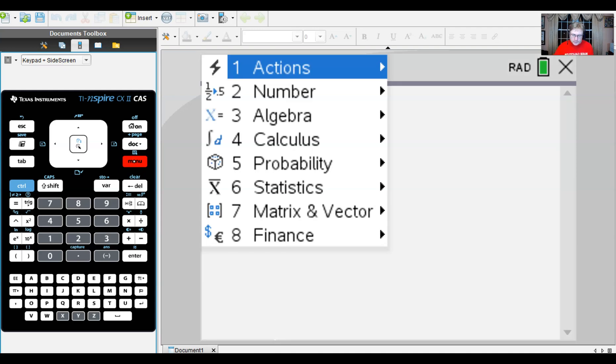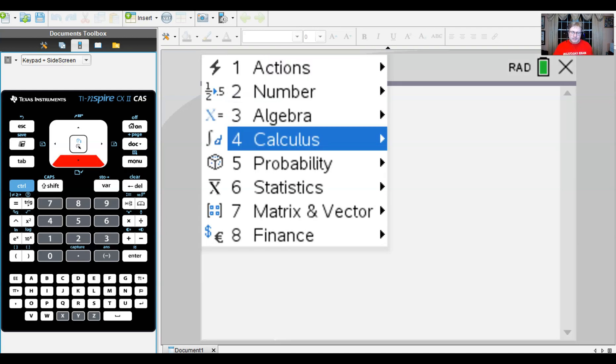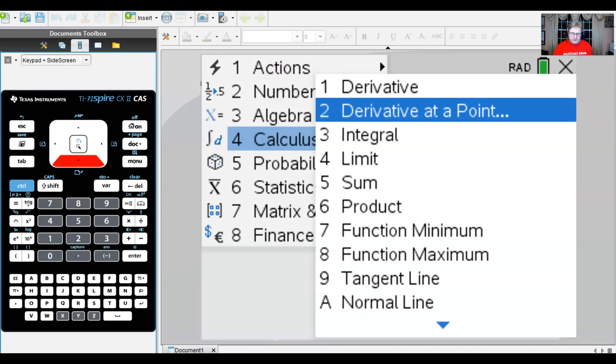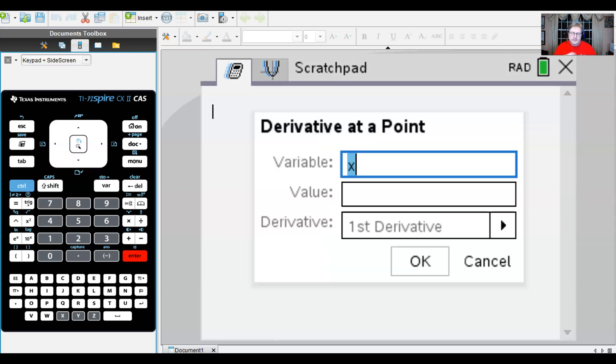Now what I'm going to do is I will go to my menu and choose the option calculus and choose the option derivative at a point. Now what that will do is it'll bring up this menu that allows me to input my independent variable and the value at which I want to take the derivative.